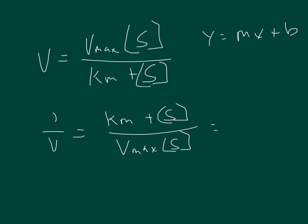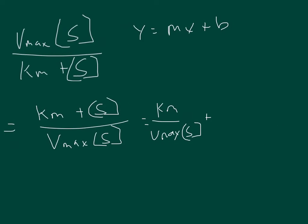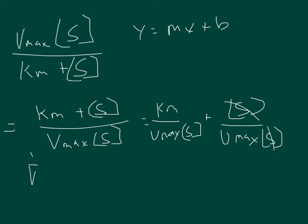That gives us Km over Vmax times the substrate concentration, plus the substrate concentration over Vmax times the substrate concentration. The substrate concentration appears in both numerator and denominator of the second term, so we can cancel it out. What we get is that 1 over V is equal to Km over Vmax times the substrate concentration, plus 1 over Vmax.